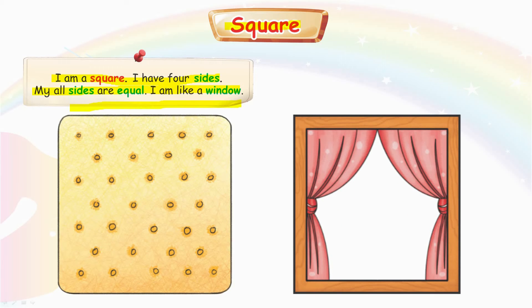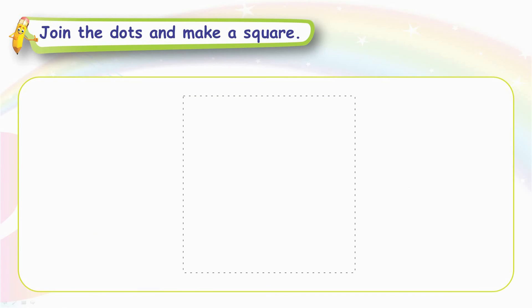This shape has four same sides. It has four corners too. Join the dots and make a square.